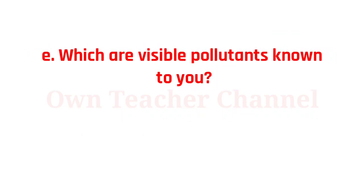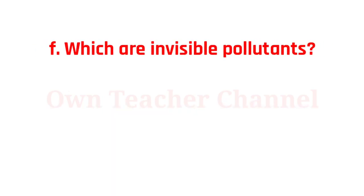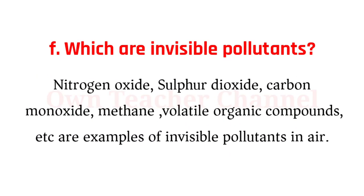E) Which are visible pollutants known to you? Dust, vehicular smoke, and pollen grains are examples of visible pollutants in air. F) Which are invisible pollutants? Nitrogen oxide, sulfur dioxide, carbon monoxide, methane, volatile organic compounds, etc. are examples of invisible pollutants in air.